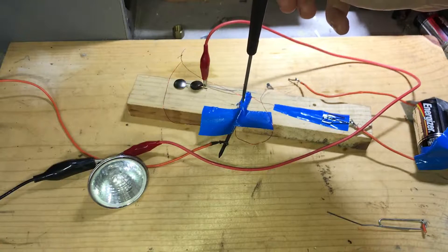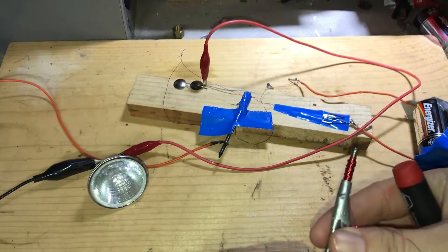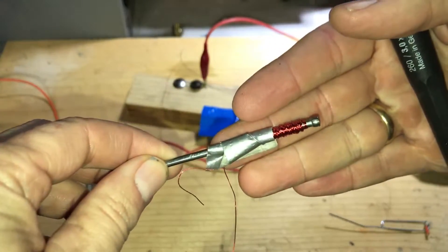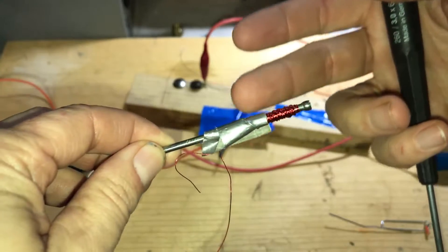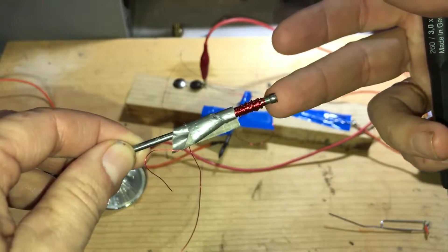And that is connected to this - this is a nail. Here's another one just like it with magnet wire wrapped around it. So when you close the switch, current flows around there and turns this into an electromagnet.